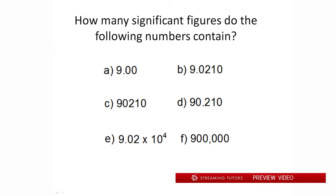Let's look at some quick examples — pause the video and try them yourself. For A, 9.00 has a decimal point present. Starting on the left, there are no leading zeros, so we just count normally: one, two, three — three significant figures. For B, the same applies — no zeros on the left, so: one, two, three, four, five — five significant figures. For C, there's no decimal point, so we start on the right side. We see one zero on the right, eliminate it, then count: one, two, three, four — four significant figures.